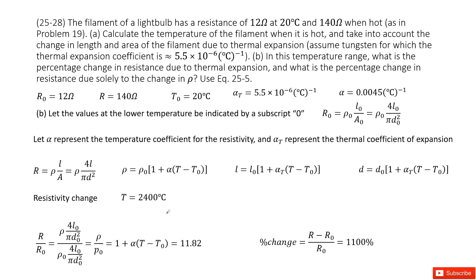Next, we consider only the resistivity change, meaning we ignore thermal expansion — L and D do not change, remaining at L naught and D naught. The only quantity that changes is rho. Substituting into the resistance formula, the geometric terms cancel, leaving just the ratio involving rho. Inputting all given quantities with alpha and T equal to 2,400 degrees Celsius, we easily get the percentage change in resistance due to resistivity change. Thank you.